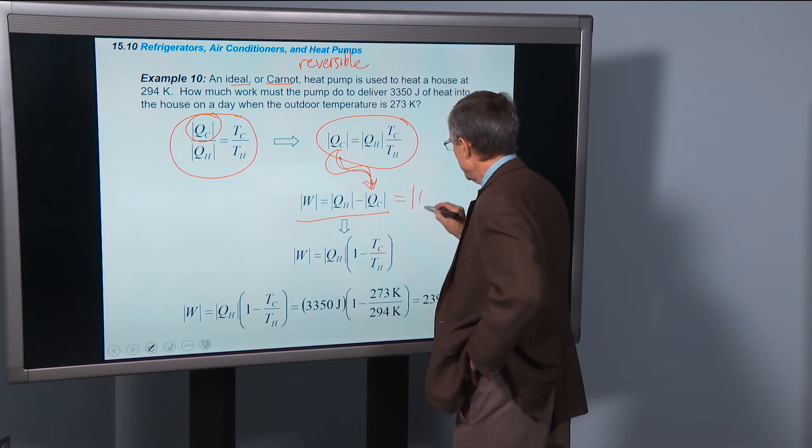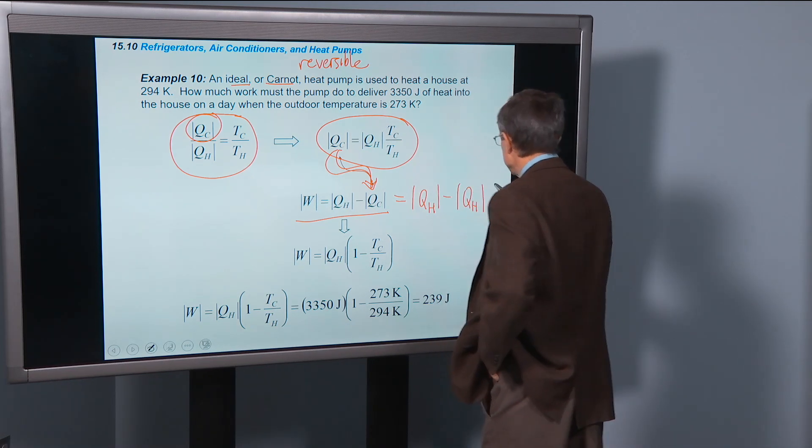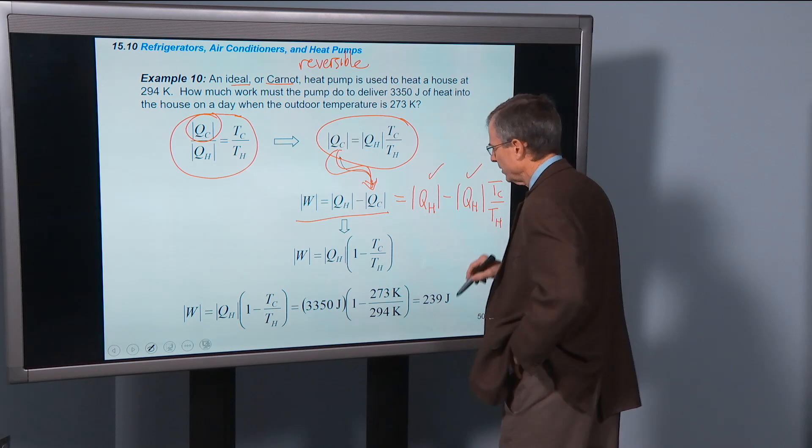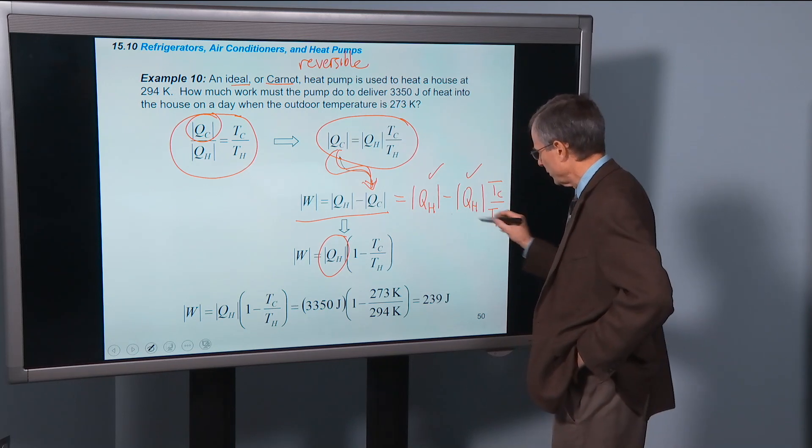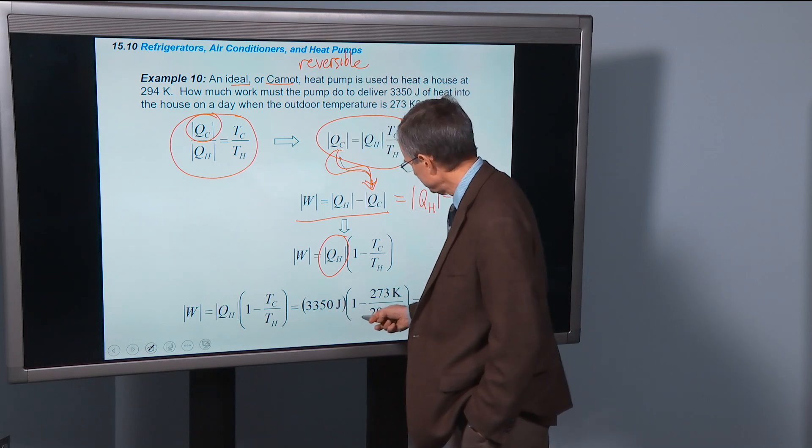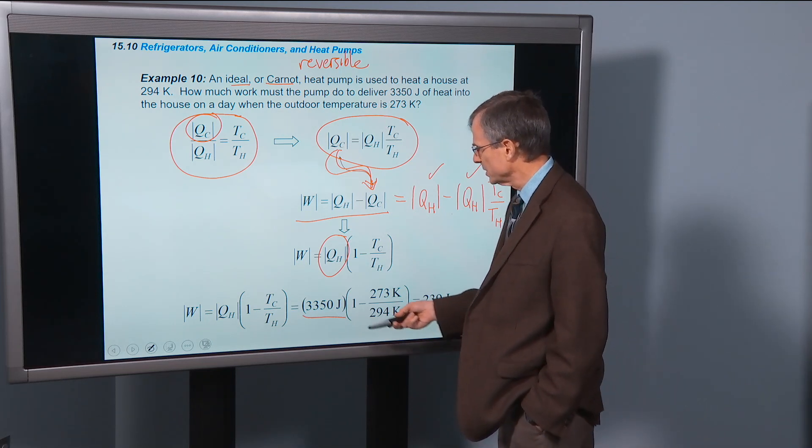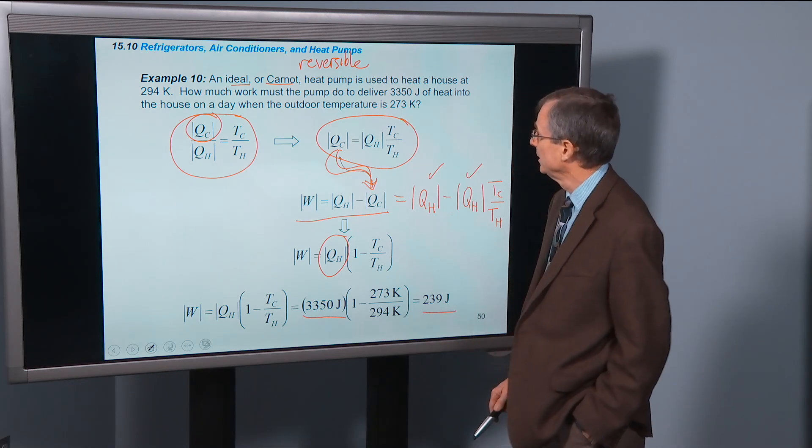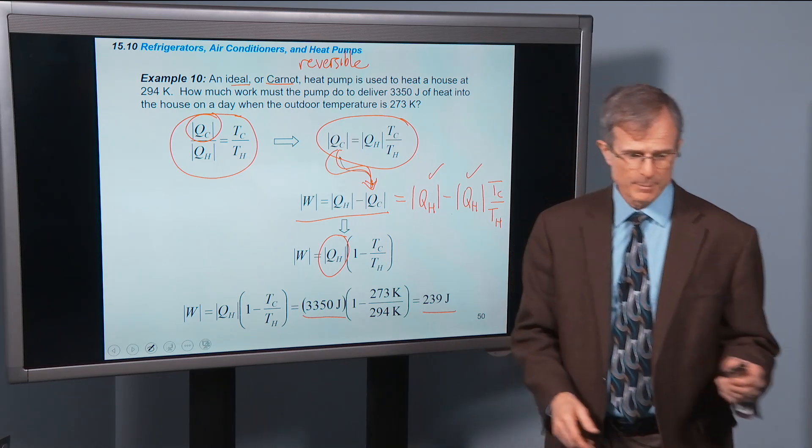So this one becomes Qh minus Qh times Tc over Th. We factor out a Qh here and here. That goes there. Times one minus Tc over Th. That's what's left over. So finally, the work done—we can plug in the numbers. We're told that we have 3350 joules of heat, and one minus Tc over Th is 239 joules. So that's how much work the pump has to do to deliver that much heat into the house.